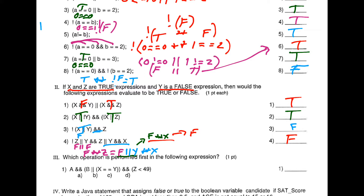Which operation is performed first in the following expression? Remember we work left to right, but we must observe order of operations. The answer is C — what's in parentheses is evaluated first. Then working outward: C is first, B is second, D is third, and A is fourth.